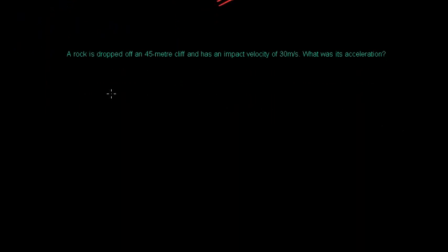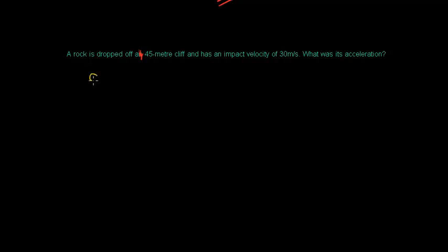This lesson covers a few examples of how and when to use the kinematics equations — there are plenty more problems online to practice. Question three: a rock is dropped off a 45-meter cliff and has an impact velocity of 30 meters per second. What was its acceleration?